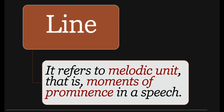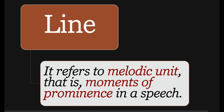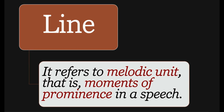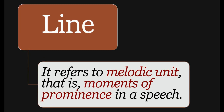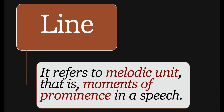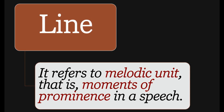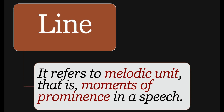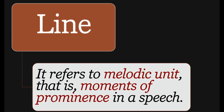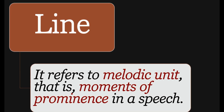For example, if I say 'I am a teacher' — that same sentence can be spoken with moments of prominence where some words and sounds are prominently pronounced, and it creates melody. It looks beautiful and nice. So 'line' refers to a melodic unit — moments of prominence in speech.